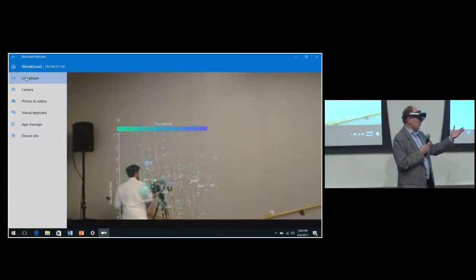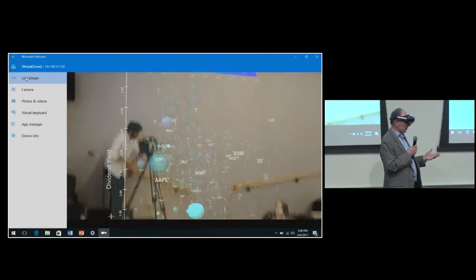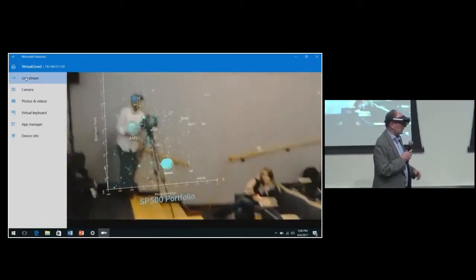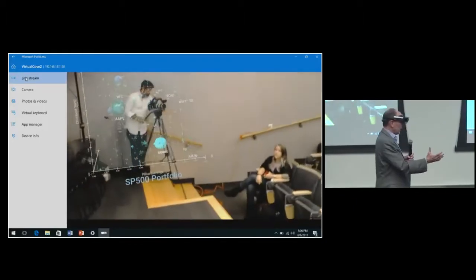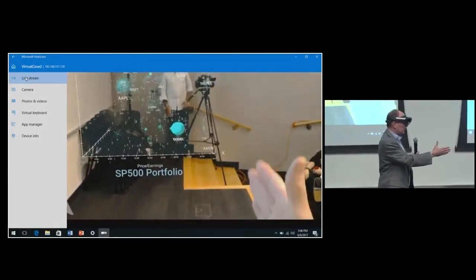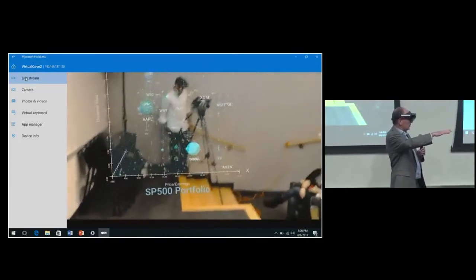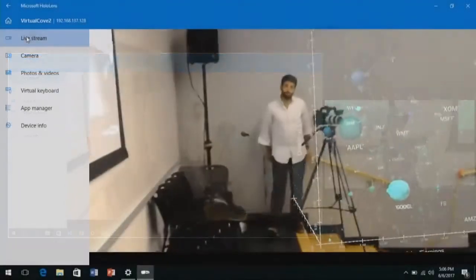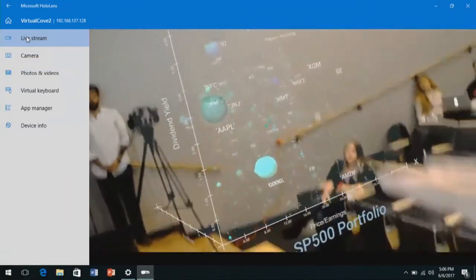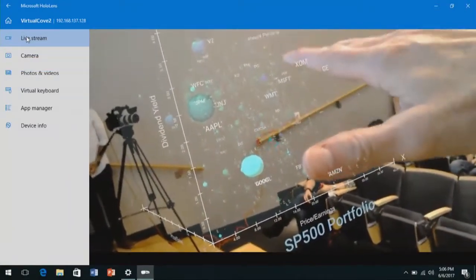You also have coloration, which is price to book, and there are four additional dimensions that are displayed in other visual effects. But you can jump out and see the entire market at once, such as Amazon, Facebook, and Google are very high on a price to earnings basis with no dividend yield. There's a little bit of a delay here. If you look at Apple, you see there is a dividend yield that's fairly high, but not so high on the price to earnings.